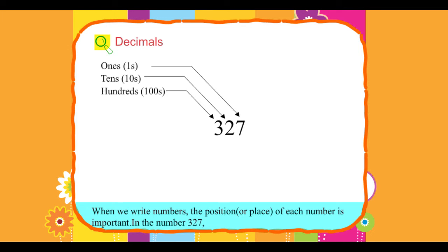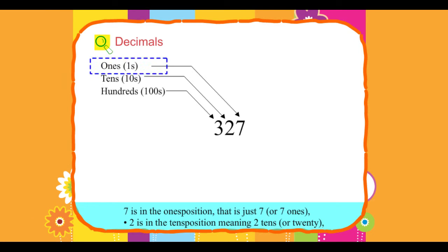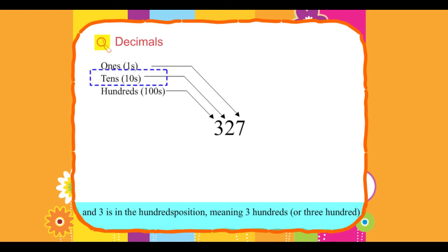In the number 327, 7 is in the ones position, just 7 or 7 ones. 2 is in the tens position meaning 2 tens or 20. And 3 is in the hundreds position meaning 300s or 300.